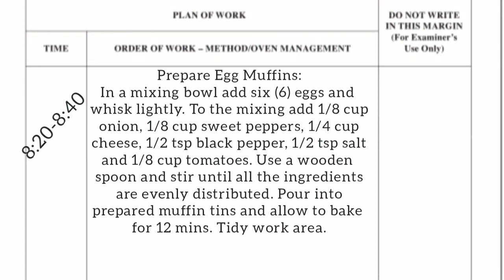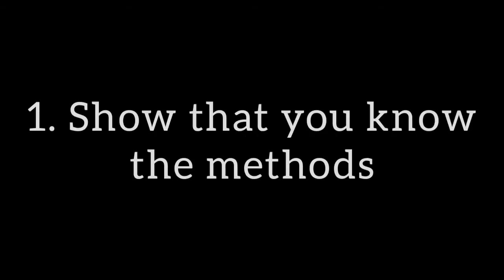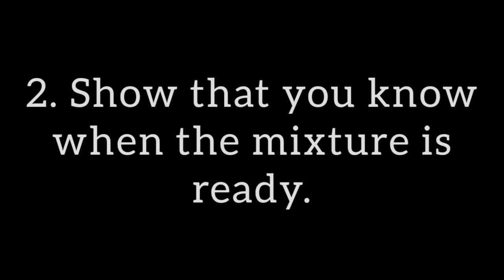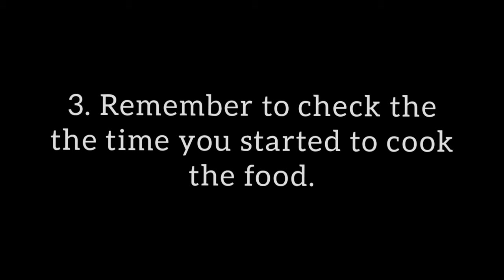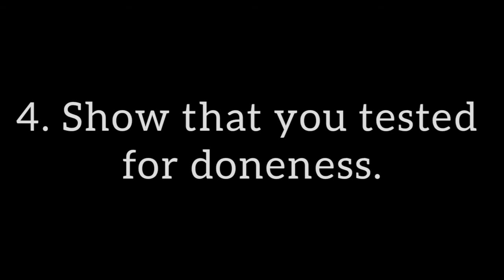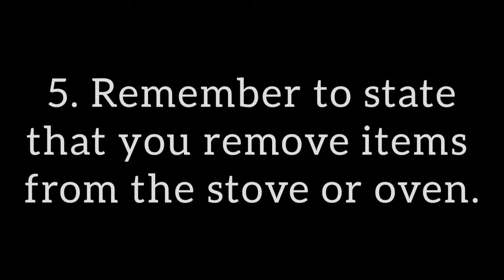You will also notice that in the example I state that I'm going to tidy the work area at the end. Guidelines for Part B: show that you know the methods by which the dishes are made — for example, dry fry, shallow fry, creaming method, grilling, poaching, etc. Show that you know when a mixture is ready — for example, 'rub fat into flour until it looks like breadcrumbs.' Remember to check the time you started cooking the food, show that you tested for doneness, and remember to state that you remove items from the stove or oven.